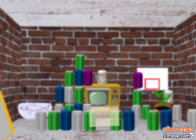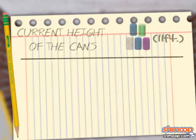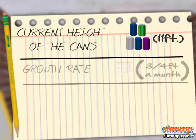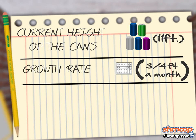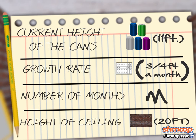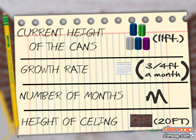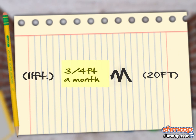Let's find a piece of paper and pencil. So we'll describe this as: the current height of the cans, plus the growth rate — which is three-quarters of a foot a month — times the number of months, for which we'll use M as the variable. Notice the clever first-letter thing there. That equals the height of the ceiling, which is 20 feet. We're solving for the number of months, so that value is M. Here's our finished equation.